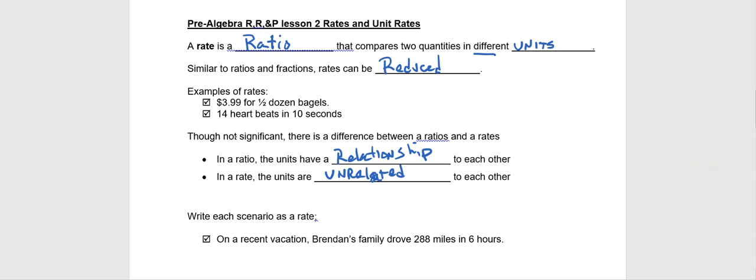In rates the units are unrelated. To give you an example of a ratio, maybe I compare something like there are 36 inches to 3 feet. You should be able to recognize that feet and inches are related to each other because they're both units of measurement. That's what we're saying when we're saying that in a ratio the units are generally related to each other, and in a rate that they're not.